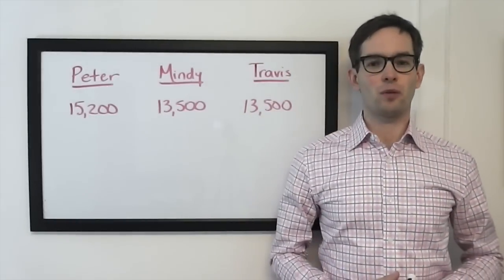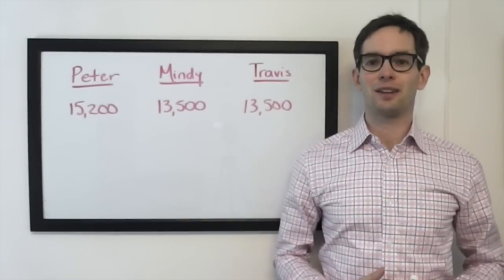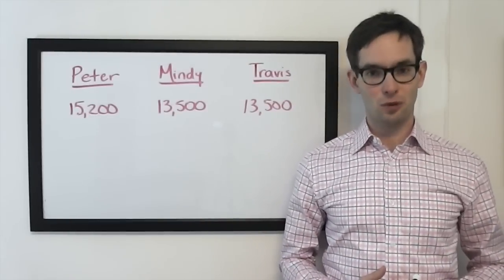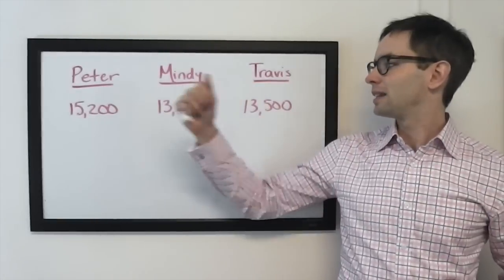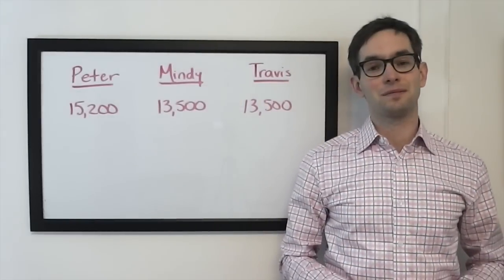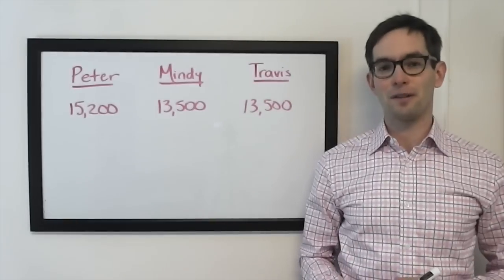Mindy and Travis, both wagering odd amounts on Daily Doubles, somehow landed on the same score going into Final. They trail Peter by 1700, but tonight's wagers are very, very easy.